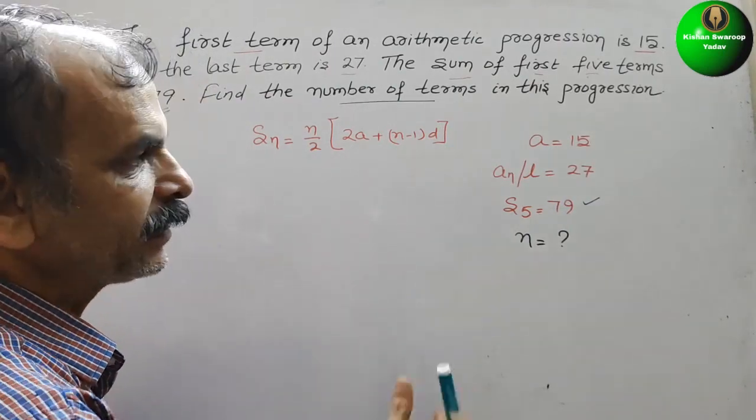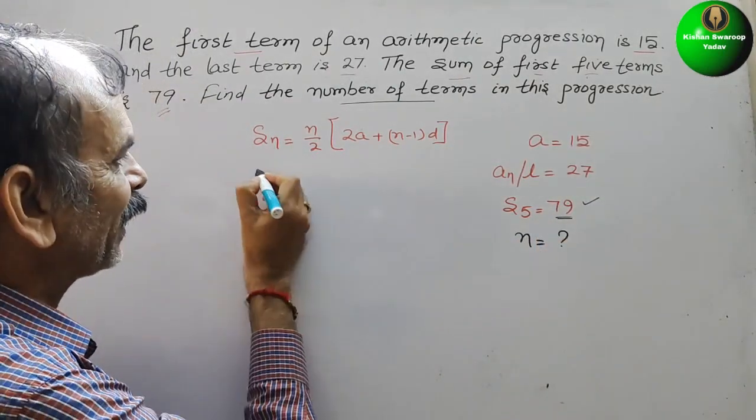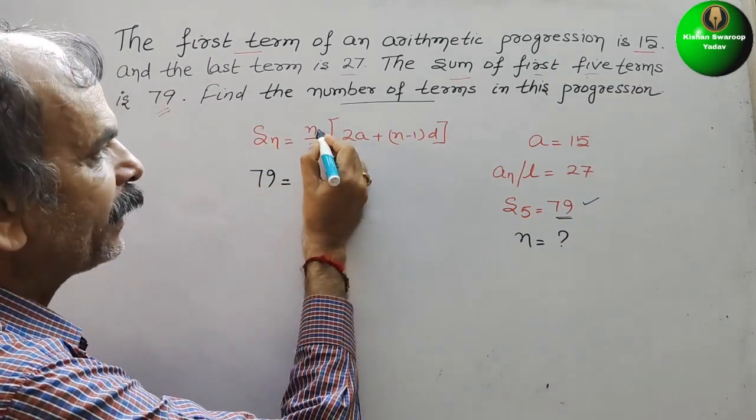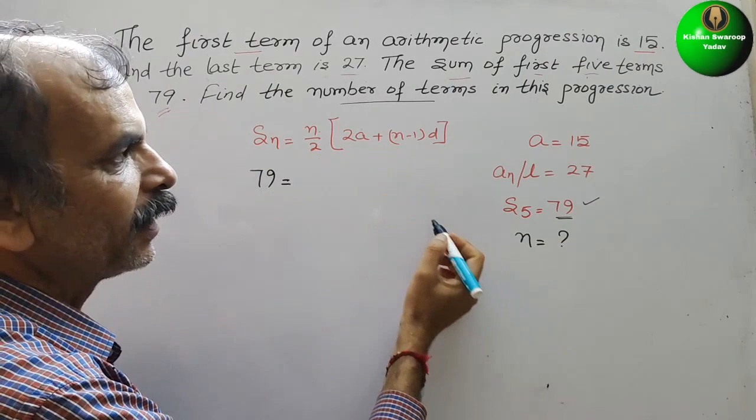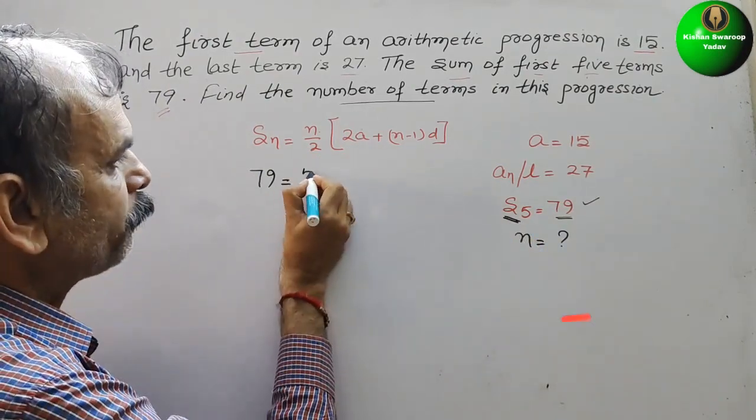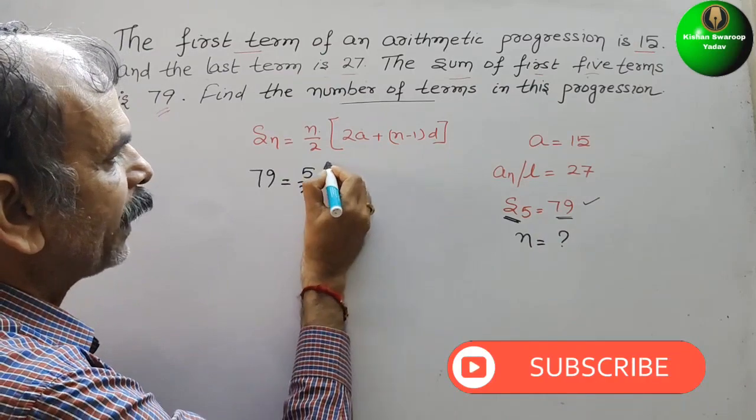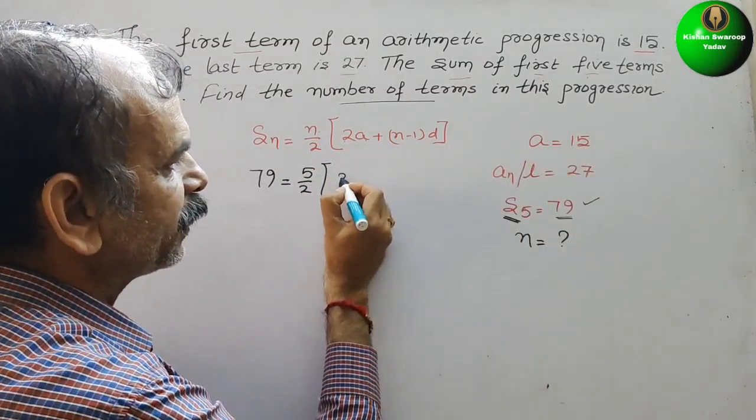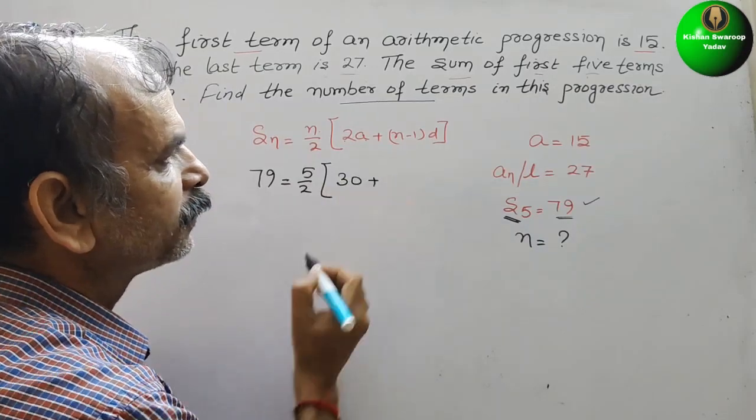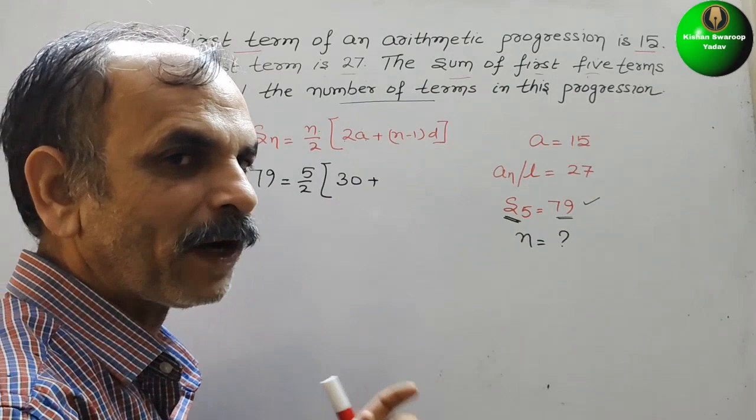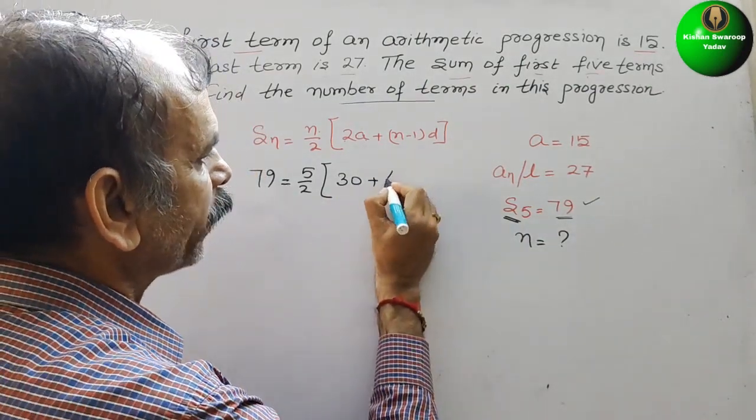So Sn is 79. That is equal to n is 5, they have given S5. So 5 by 2, and here comes 2A, 2 into 15 is 30, plus n minus 1, that means 5 minus 1 is 4, so here comes 4D.